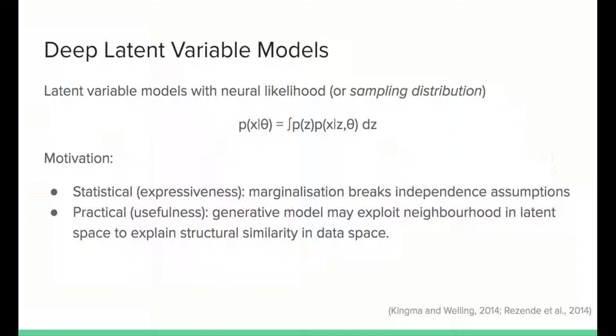There are at least two angles from which we can motivate a deep LVM. From a statistical point of view, the marginalization you see on the slide breaks independence assumptions in the likelihood, leading to more expressive distributions. From an application point of view, the posterior distribution of a deep LVM reveals something about the correlations exploited by the generative model, by the joint distribution you see in the slide. This has applications such as disentanglement learning and controllable generation, as well as unsupervised and semi-supervised learning.